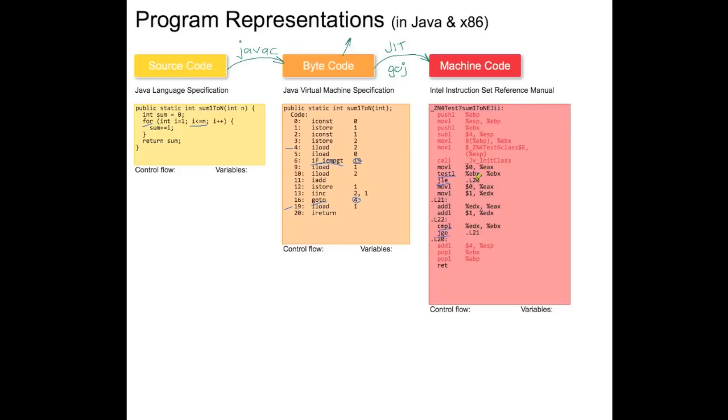Here in the machine code we have similar ideas. We also have this branch, and then we have somehow the target of the branch, but this time the target is given as a label. Here is a label, and here is another label, L20 and L21. So this means that jump less or equal to L20 will go here. And here it says jump greater or equal to L21 will go here.